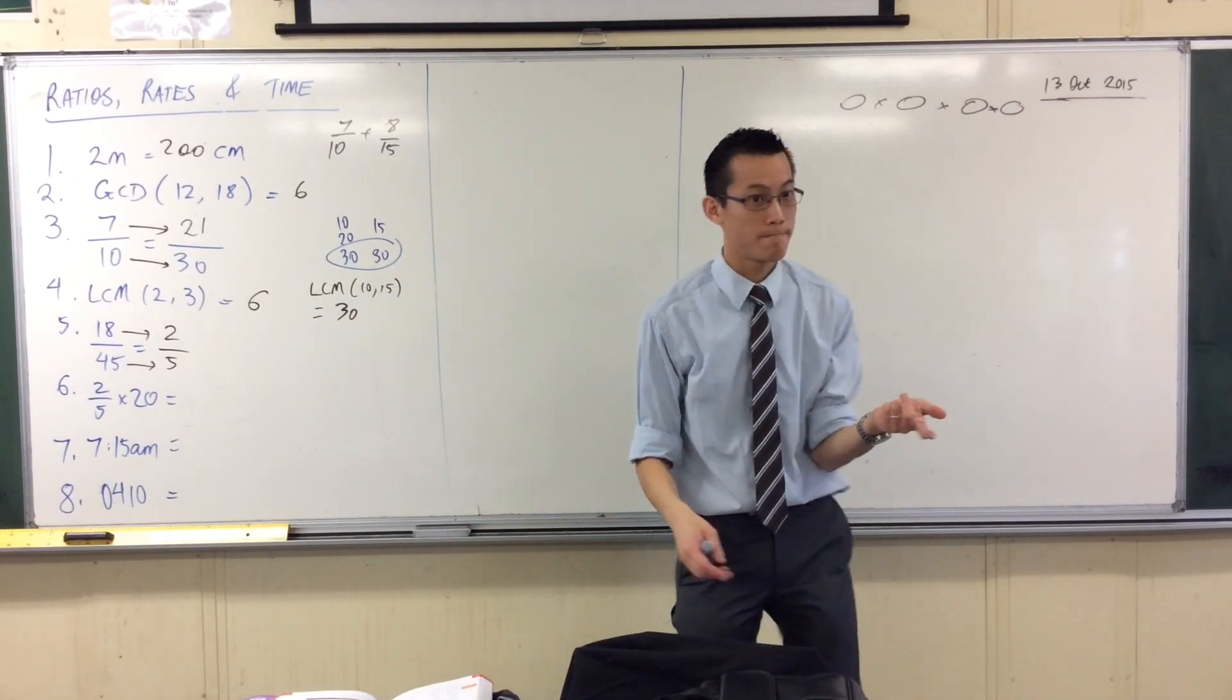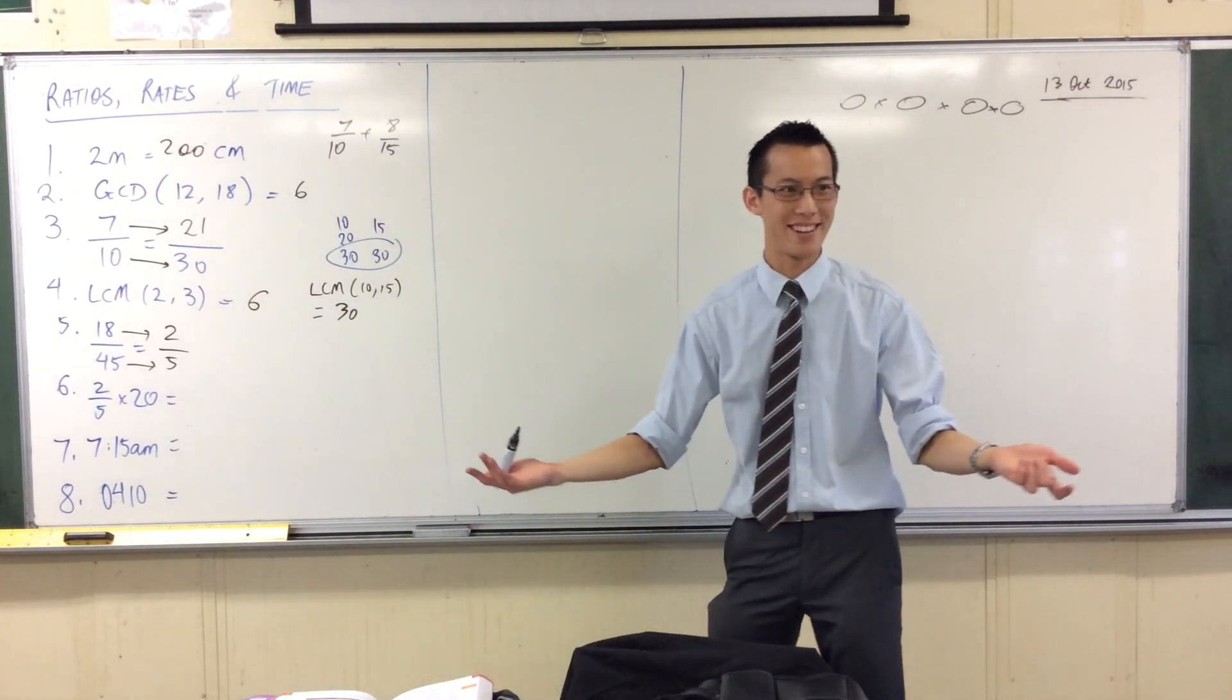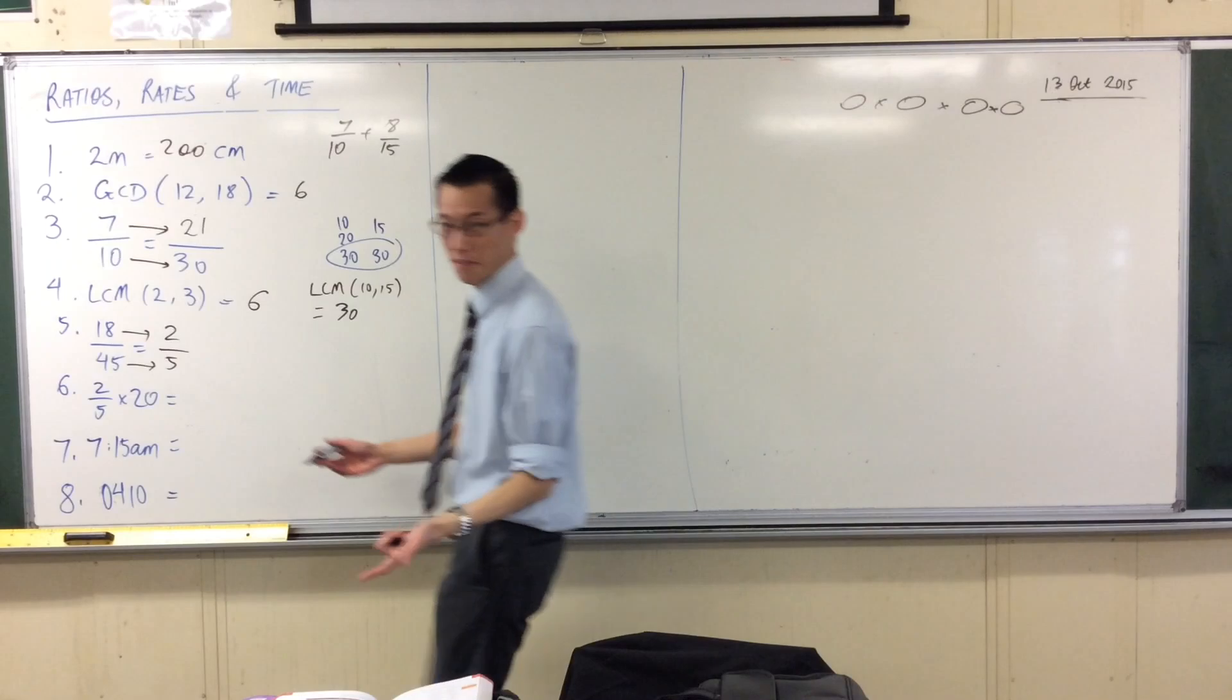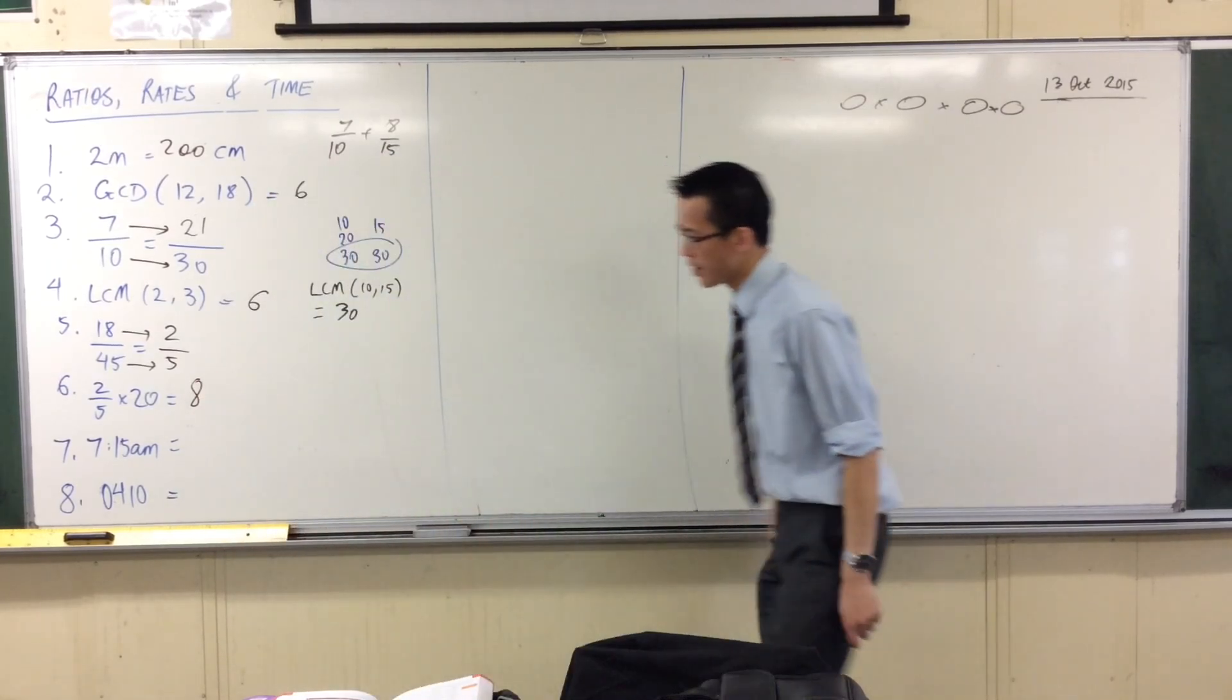Two-fifths of 20. You can all tell me what two-fifths of 20 is. It's eight, because one-fifth of 20 is four.